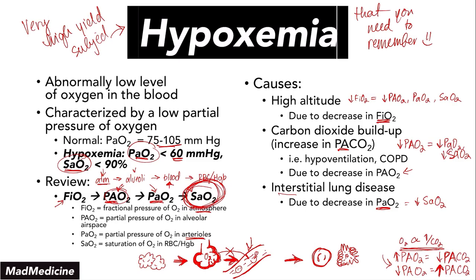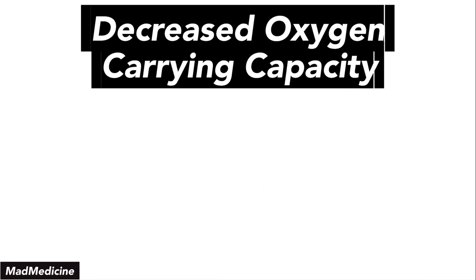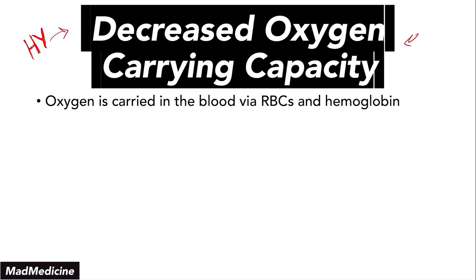The first pathologic condition leading to decreased oxygen carrying capacity is anemia. In anemia, you have a decrease in red blood cell mass, meaning you don't have enough red blood cells to carry oxygen to tissue. You might have normal saturation, but you're not actually delivering enough oxygen. If you have 10 red blood cells and all are saturated, you have 100% saturation. But if you only have 5 red blood cells and all are saturated, you're still at 100% saturation but delivering only 50% of the oxygen.